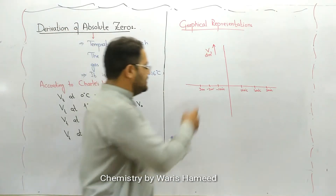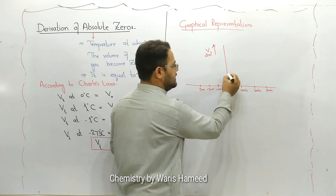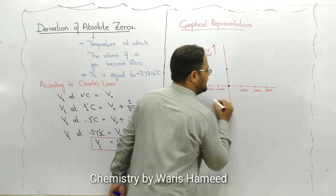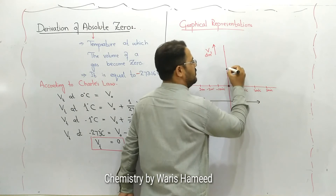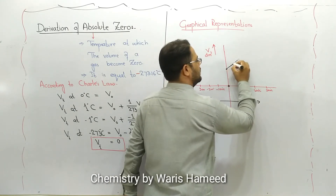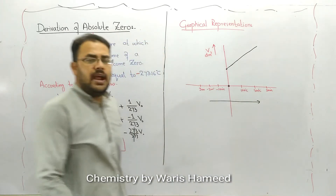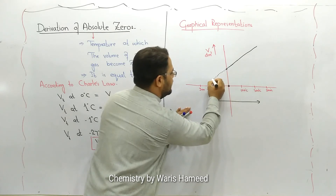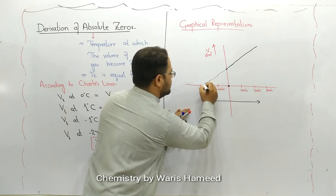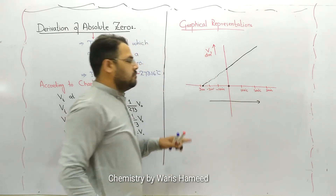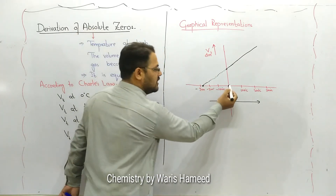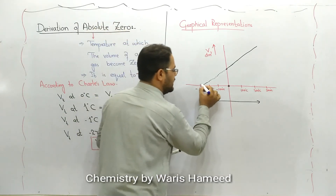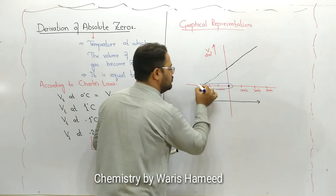At zero degrees Celsius the gas has some volume. When we increase the temperature, the volume of the gas also increases. When we decrease the temperature, the volume also decreases. As we approach minus 273 degrees Celsius, the volume of the gas becomes zero — the line becomes almost parallel to the zero scale.